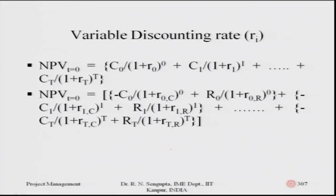For variable interest rate, the same concept applies — only the values of R change. C₀, C₁, C₂ are the net input/output values and the interest rates are variable: R₀, R₁, R₂ through R_T. When the interest rates for inflows and outflows (demand and supply) are different, we use R suffix C for outflows and R suffix R for inflows, and calculate the net present value accordingly with minus signs on the cost terms.